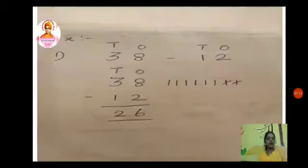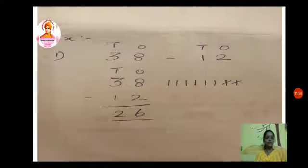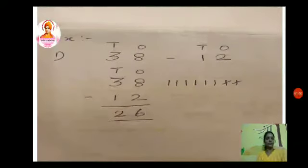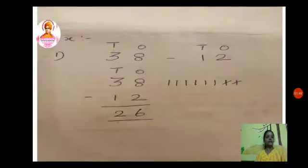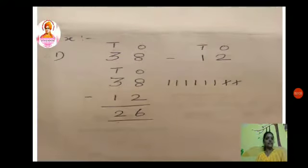Here I have given you the sum 38 minus 12. I have also labeled the place values: ones and tens. In addition we can add any number in any form — first number plus second number, or second number plus first number. But in subtraction we should always subtract the second number from the first number, even if the first number is smaller than the second number. So 38 minus 12: I have written 38 and 12. For 8 minus 2, I used the static method — I drew 8 lines and crossed out 2, so the answer is 6. Then 3 minus 1 is 2. So the answer is 26.